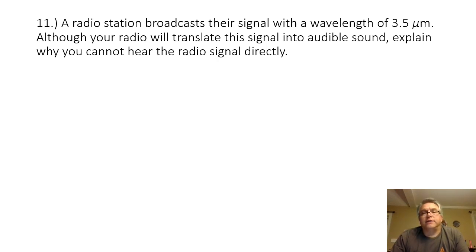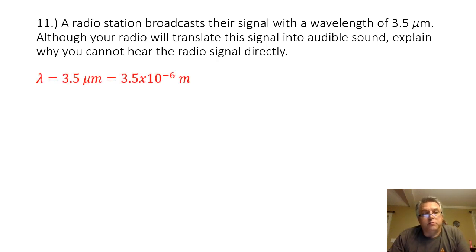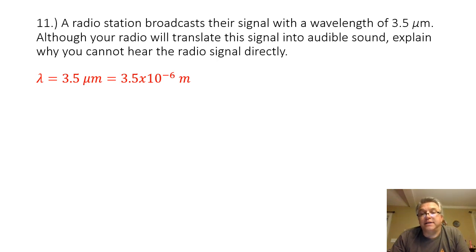Problem 11: A radio station broadcasts their signal with a wavelength of 3.5 micrometers. Although your radio will translate the signal into an audible sound, explain why you cannot hear the radio signal directly. We are given the wavelength of the radio signal, which is 3.5 micrometers. I need to convert that to meters, so that is 3.5 times 10 to the minus 6 meters.